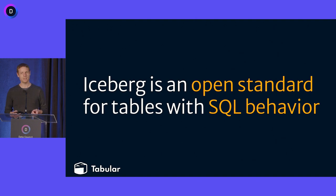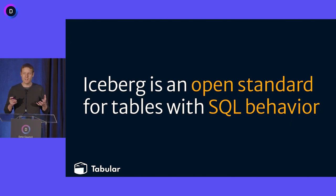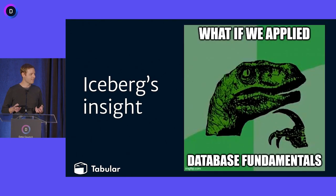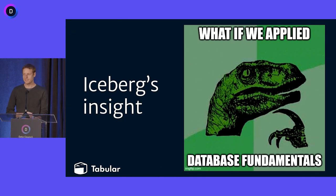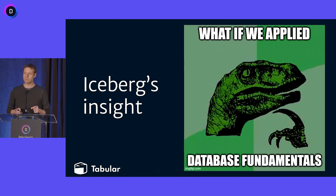One of the biggest stumbling blocks for the big data ecosystem in the last decade is that we accidentally compromised SQL behavior a long time ago and never really restored it. That's why we've had such a hard time working with data, building reliable pipelines, and doing things that are important for companies. The central idea behind Iceberg is: what if we applied database fundamentals to this table problem? It looks remarkably like what we had in 1992 — tables that work as an abstraction, so you don't have to care about what's underneath.